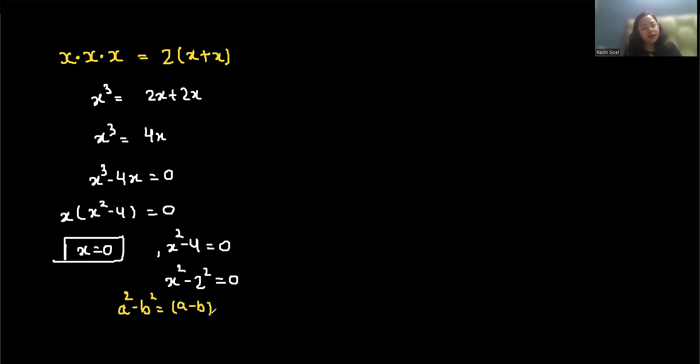So here it becomes x plus 2 times x minus 2 equals 0. So the factor is x plus 2 equals 0, x equals minus 2, and x minus 2 equals 0, x equals 2.